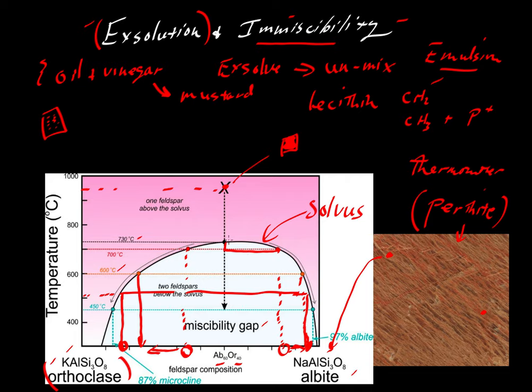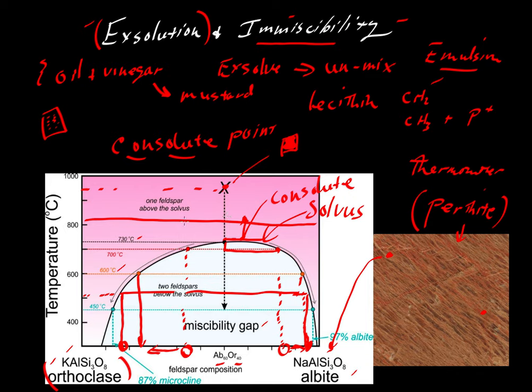One other term that's not shown here, the very top of this curve, the highest temperature that you can have along the solvus would be referred to as the consolute point. And all that means, 'con' means with, 'solute' means to dissolve or create a solution. Above the consolute point, that would be the temperature above which no matter what bulk composition you would have, you would have a single feldspar composition. There would be no separation into orthoclase or albite rich components.